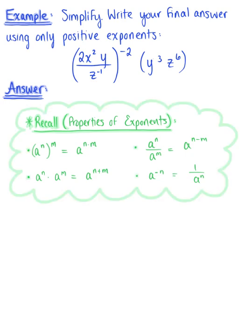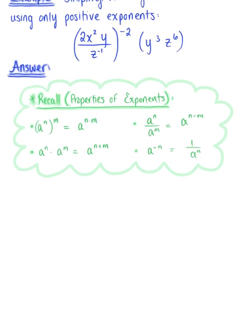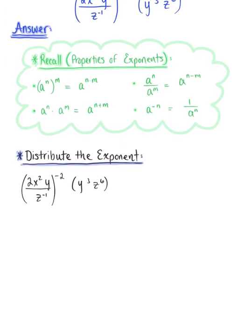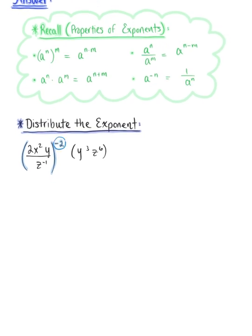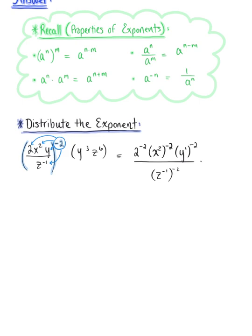So the first thing that we want to do here is apply the power of exponents property and distribute the exponent negative two. We are distributing this exponent negative two through to each term in this expression — each of the three terms in the numerator and that term in the denominator. We can rewrite this expression as two to the negative two, multiplied by x squared to the negative two, multiplied by y to the first power now raised to the negative two, all divided by z to the negative one raised to the negative two. And this is still multiplied by the expression y cubed z to the sixth.